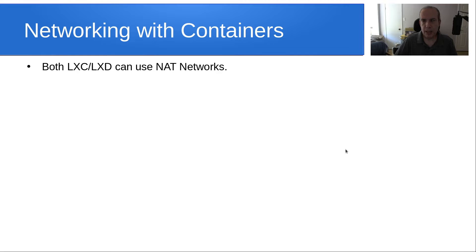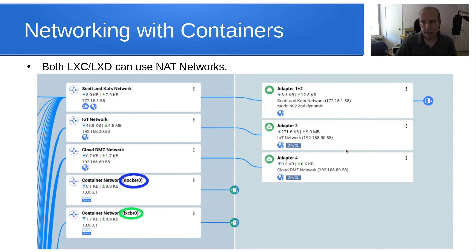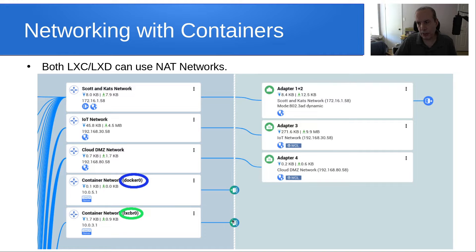Networking with containers: both LXC and LXD can use NAT networks. Here's a screenshot from my QNAP container station — what they call the network and virtual switch display. You can see there is a container network called Docker0 that is a NAT network running at 10.0.5.x, and there is a container network for LXD called LXD BR0 running at 10.0.3.1. They don't appear to go to a physical adapter, because exposing those containers from the NAT is purely a choice of the individual container implementation.